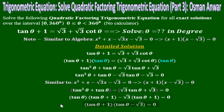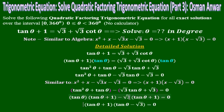Notice that (tan θ + 1) appears in both groups, so we can factor it out. This gives (tan θ + 1)(tan θ − √3) = 0.